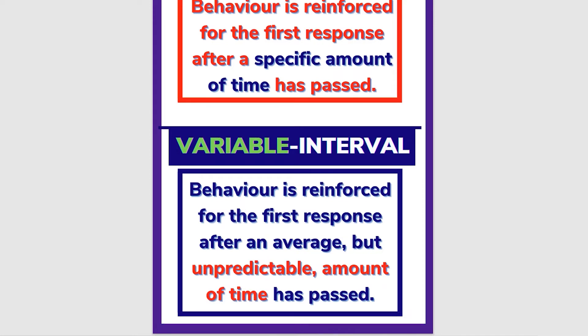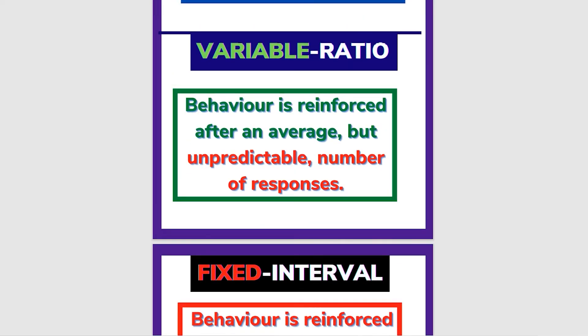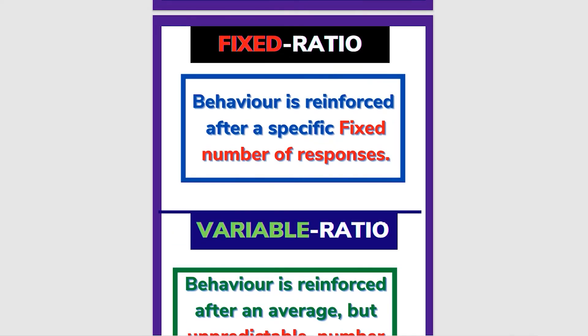The basic difference is that in the fixed interval it is always the same time — for example, 10 minutes. In the variable interval schedule, the time changes unpredictably. That is the variable interval schedule.